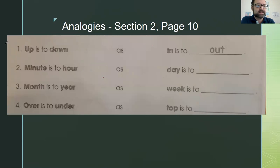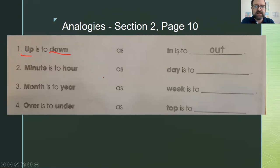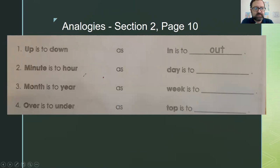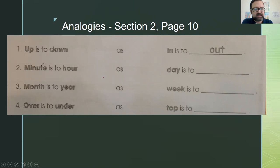Number one: up is to down as in is to out — up is the opposite of down, and in is the opposite of out. Number two: minute is to hour — a minute is an increment of time smaller than an hour; we can fit 60 minutes in one hour — as day is to blank.